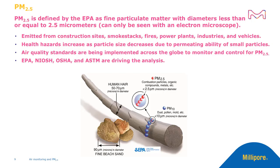Associated health hazards increase as particle size decreases due to the permeability of small particles. From the lungs, they are able to enter the bloodstream causing asthma, respiratory disease, heart disease, genetic mutations, low birth weight, and death. New air quality standards are being implemented across the globe to monitor and control for PM2.5.